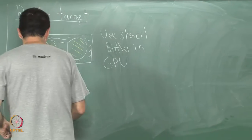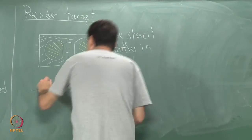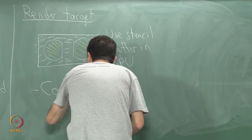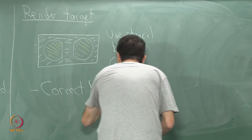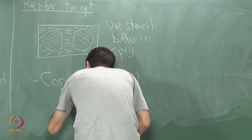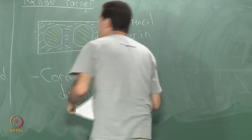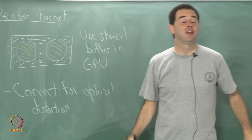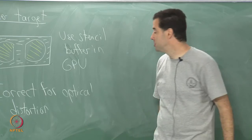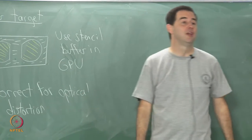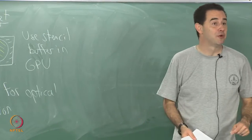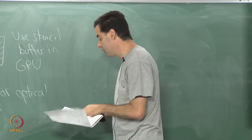The next problem is that you have to correct for optical distortion. This could correspond to the spherical aberrations of the lens, chromatic aberrations, or other kinds of aberrations. You have to correct for the optical distortion of the lenses — I have mentioned it before in previous lectures but not yet in the context of rendering.